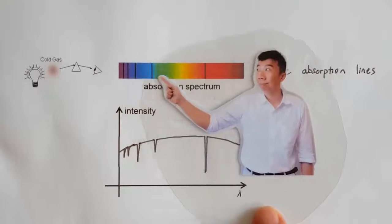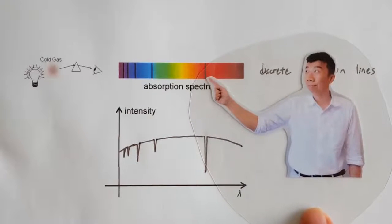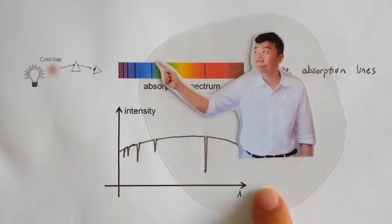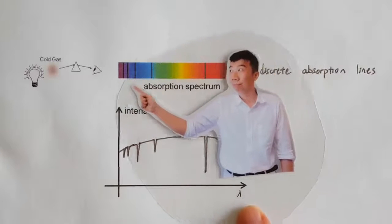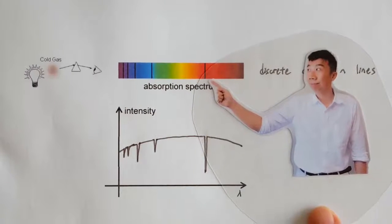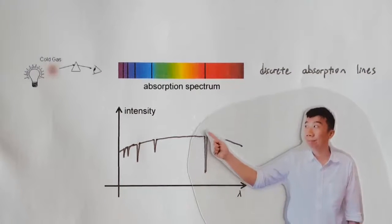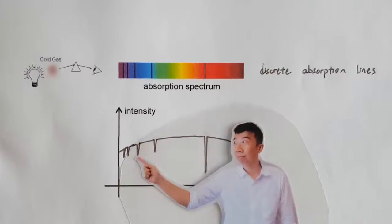So all the different shades of colors are unaffected, except for a very specific shade of red, a very specific shade of blue, and so on. The absorption lines are actually not completely dark, and some absorption lines are darker than others.